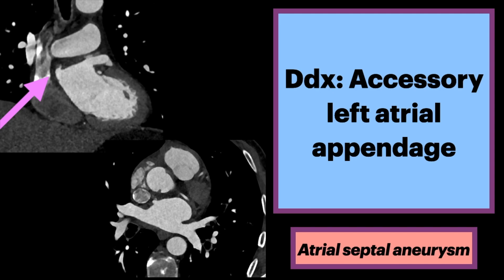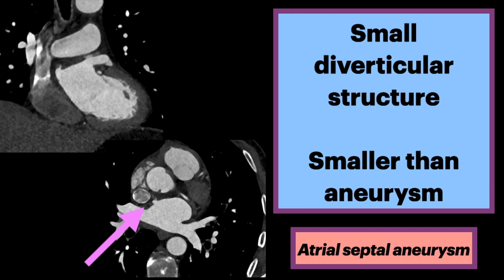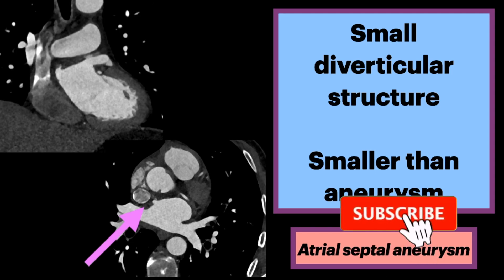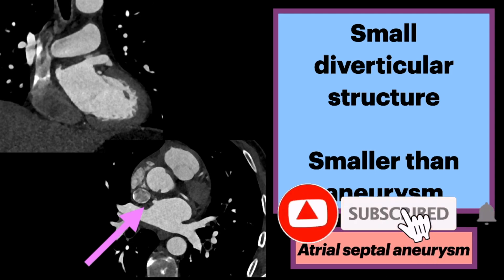It's important to distinguish from an accessory left atrial appendage. Here we see a 4mm triangular-shaped outpouching from the supermedial wall of the left atrium, which has a wide base and smooth margins, consistent with a left atrial accessory appendage. This is found in less than 10% of patients. They are seen as a small diverticular structure projecting from the right upper side of the left atrial wall. It's important not to confuse this with an atrial septal aneurysm, which is usually larger.